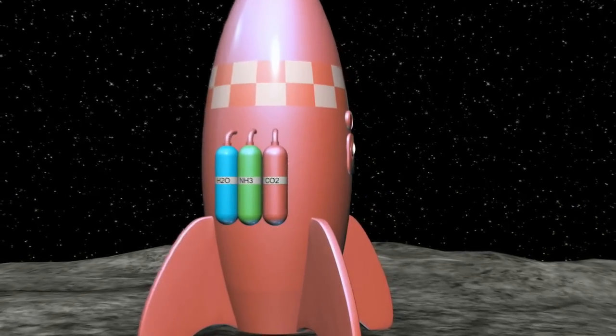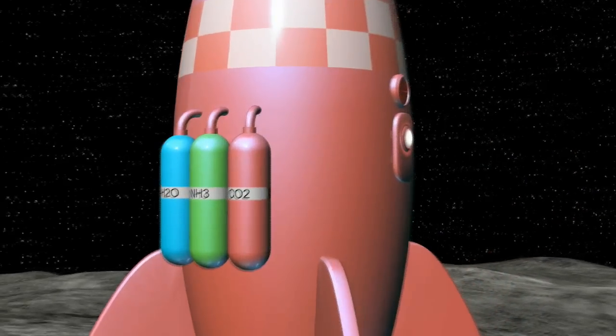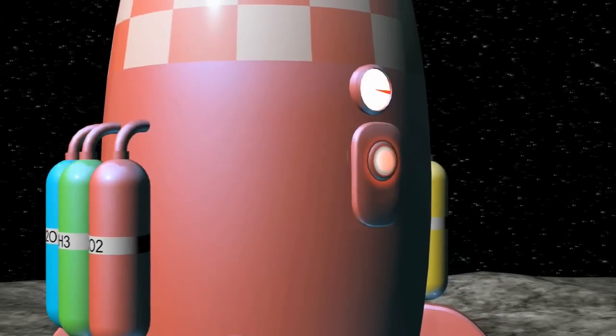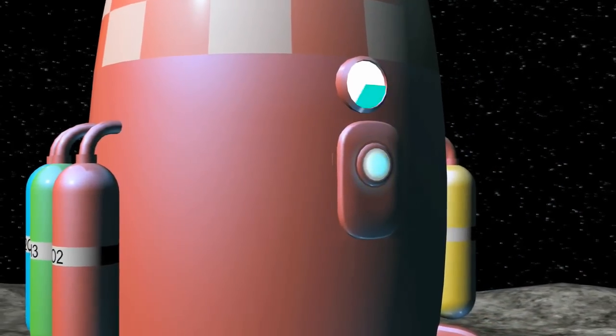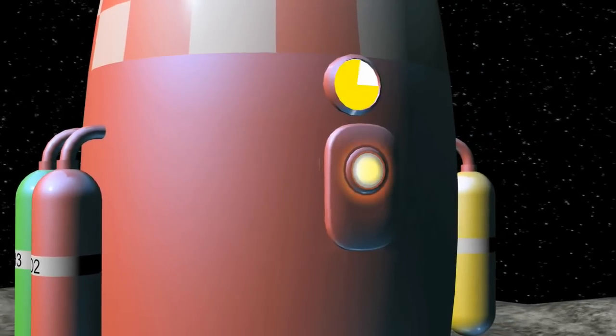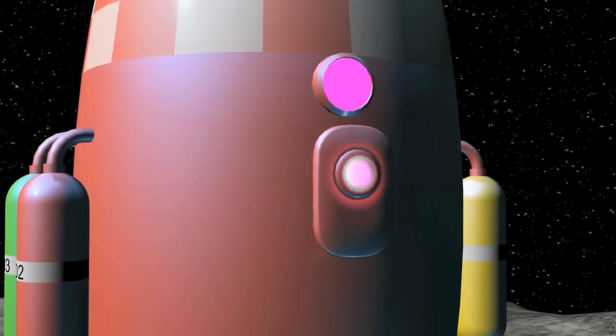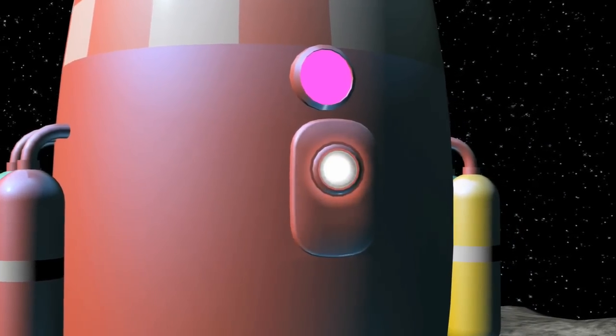And our nanofabricating rocket is starting up with its sources of hydrogen, ammonia, and carbon dioxide, and is fabricating our digital entity into a creature of atoms.